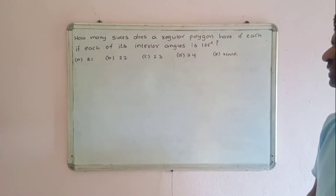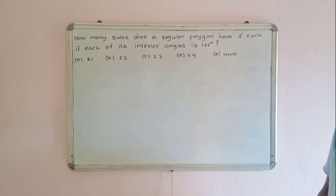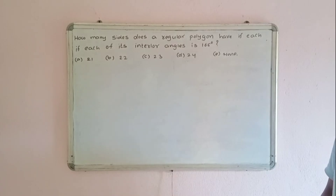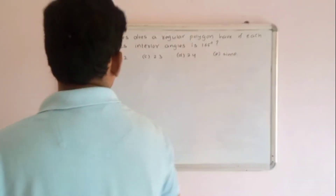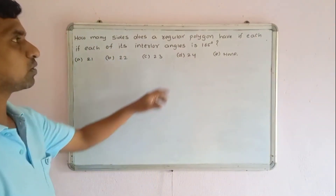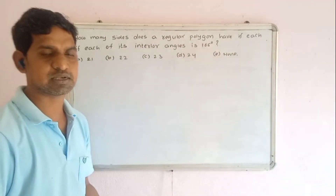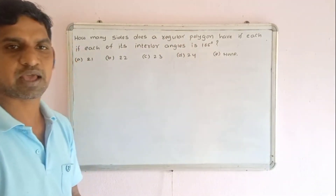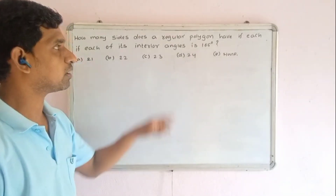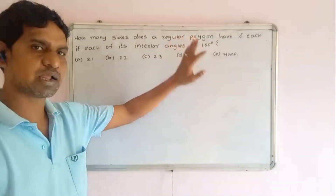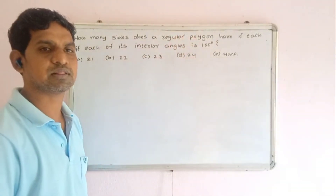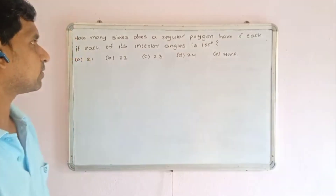How many sides does a regular polygon have if each of its interior angles is 165 degrees? A polygon is a closed figure having line segments. A regular polygon means all line segments are equal.